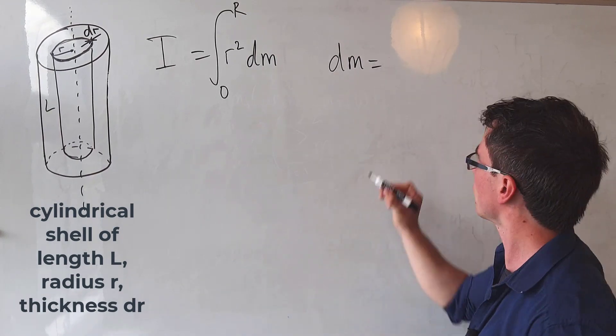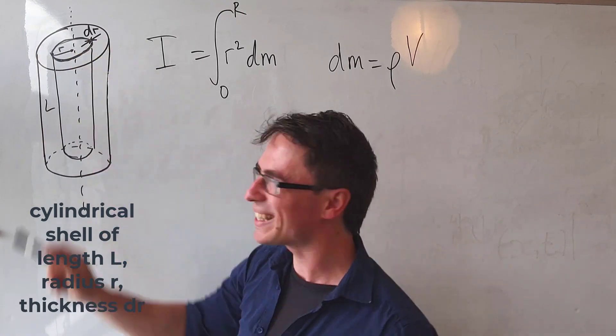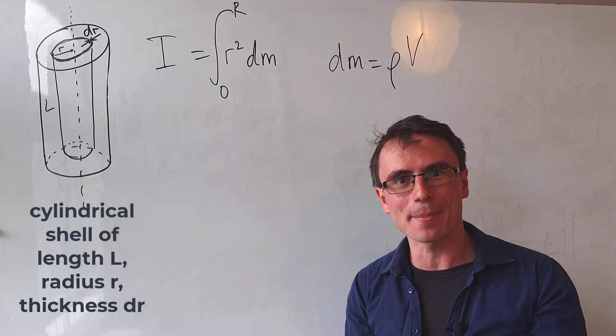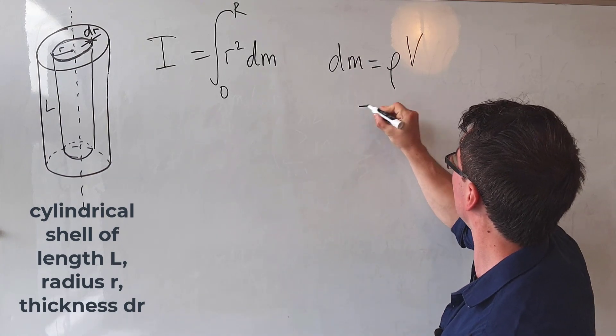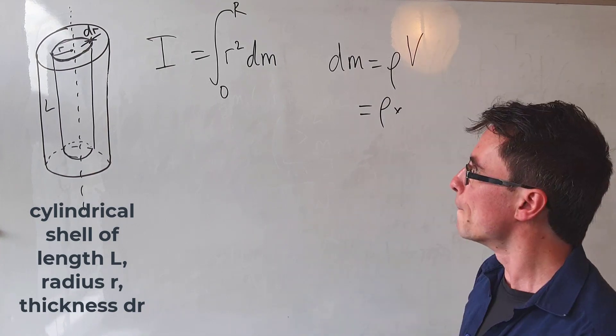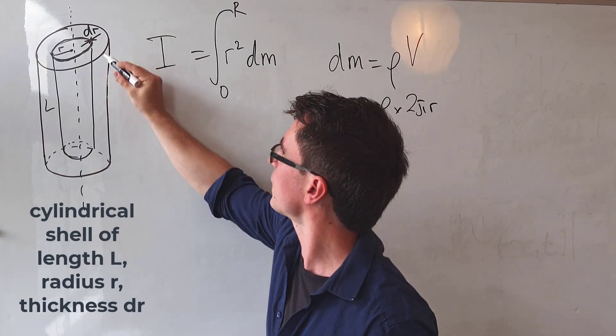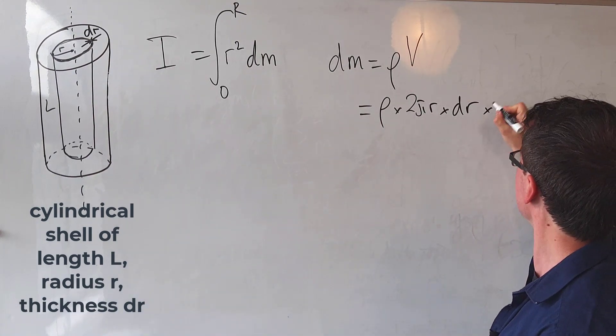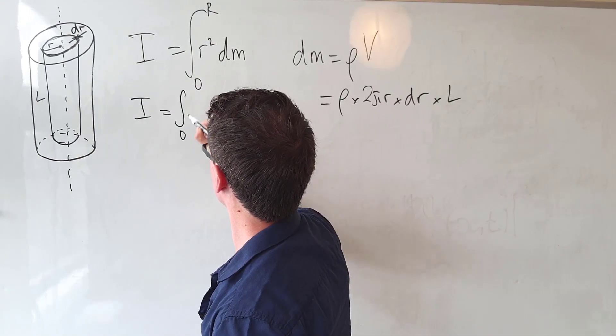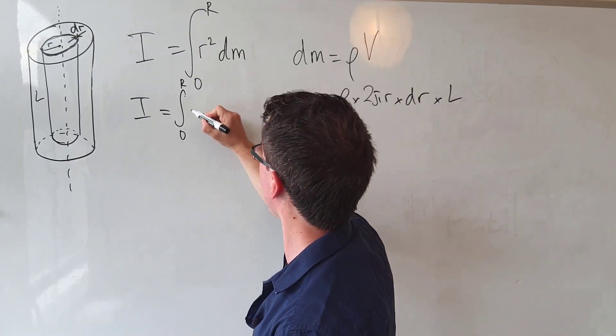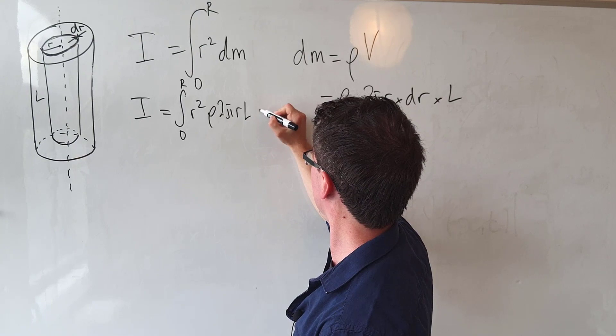So dm is just going to equal the density multiplied by the volume. What would the volume of this tiny shell of mass dm actually be? Well, we would need to multiply all of its dimensions to get that. So we're going to get that dm will be equal to rho multiplied by the circumference, which is just 2 pi r. The thickness is dr and the length is l. Let's plug this into the integral directly and we're going to find that I will be equal to the integral between zero and r of r squared times dm, which is going to give us rho 2 pi r l dr.